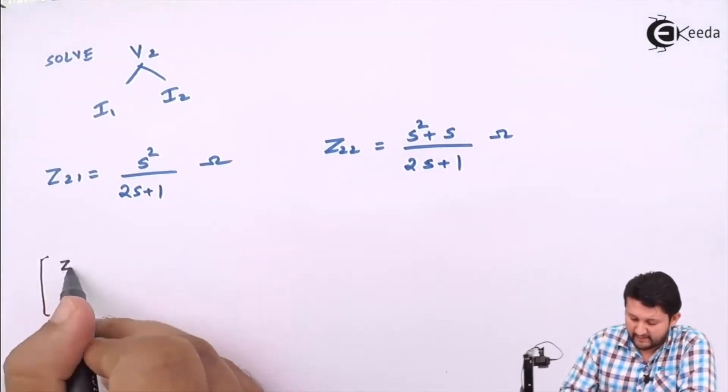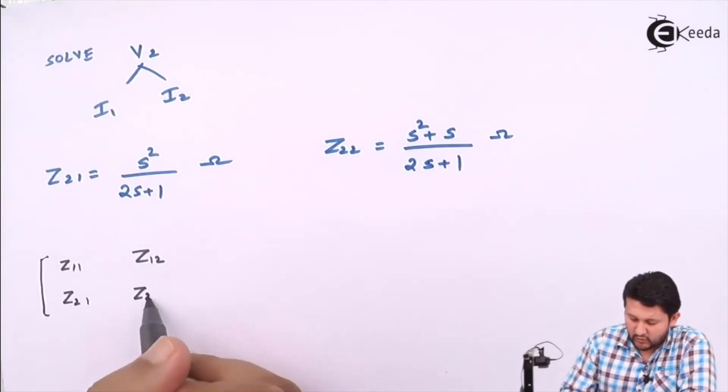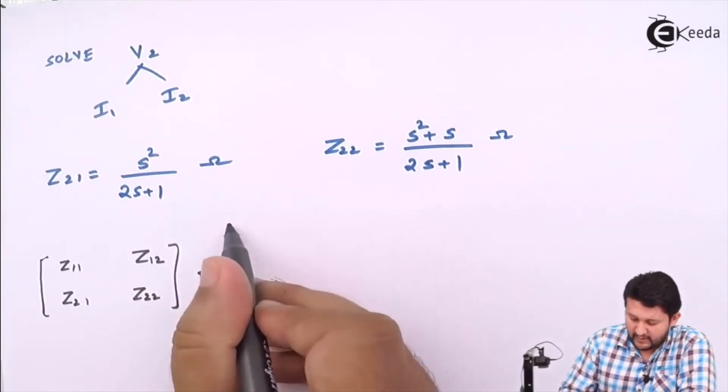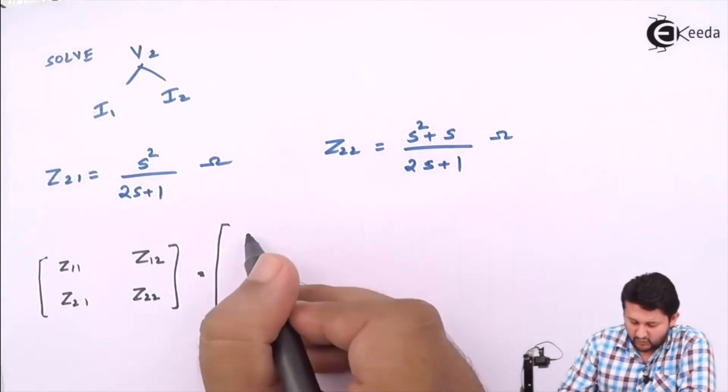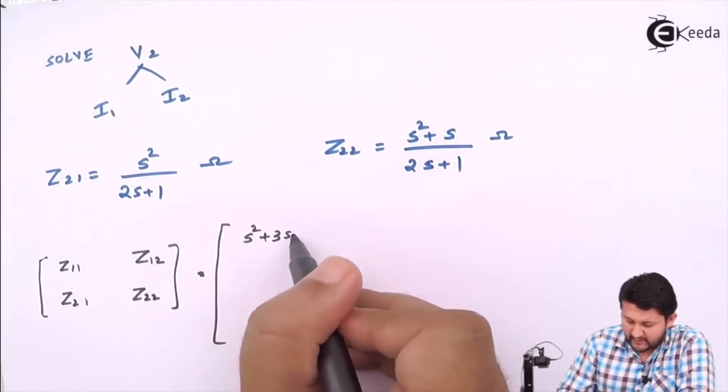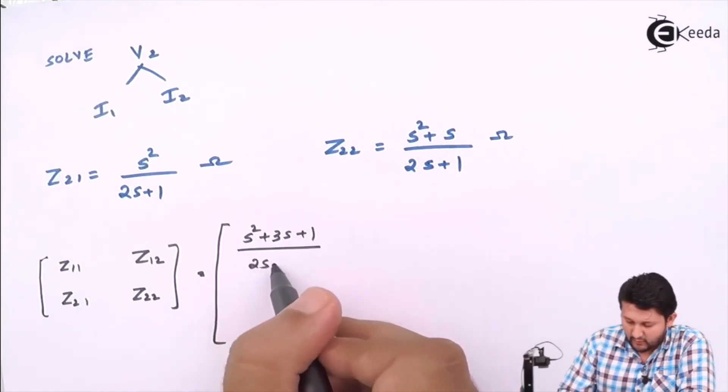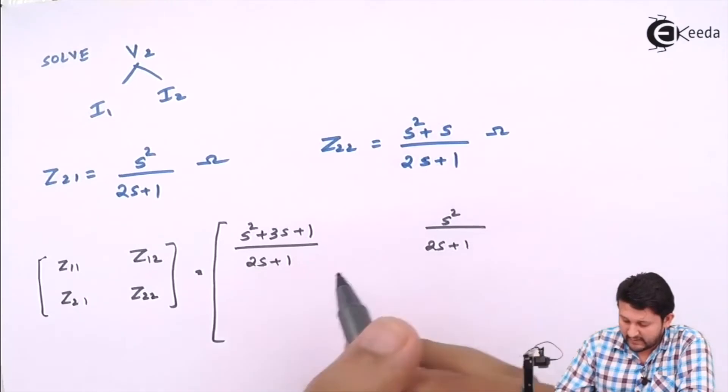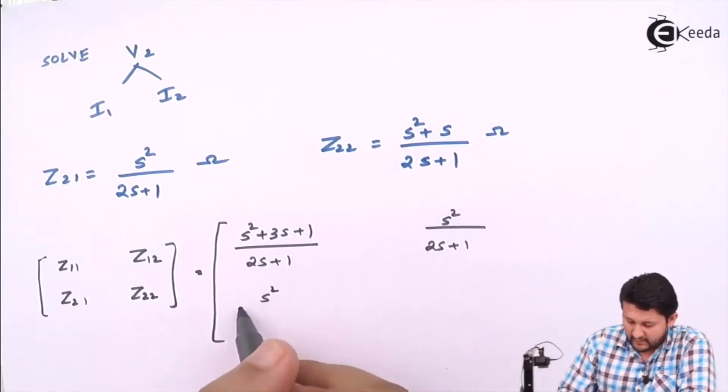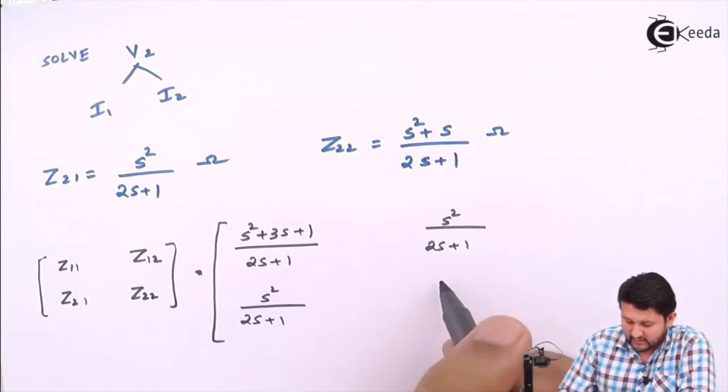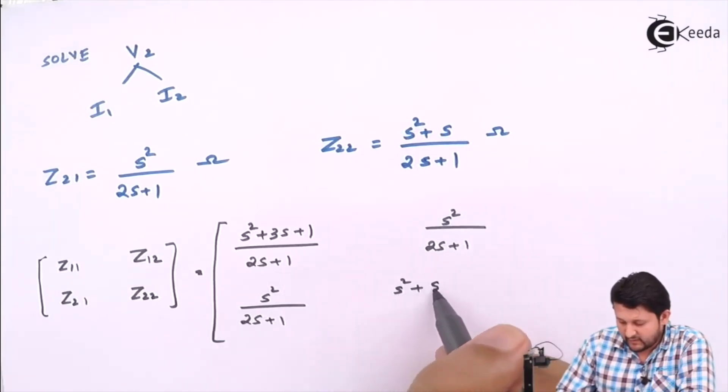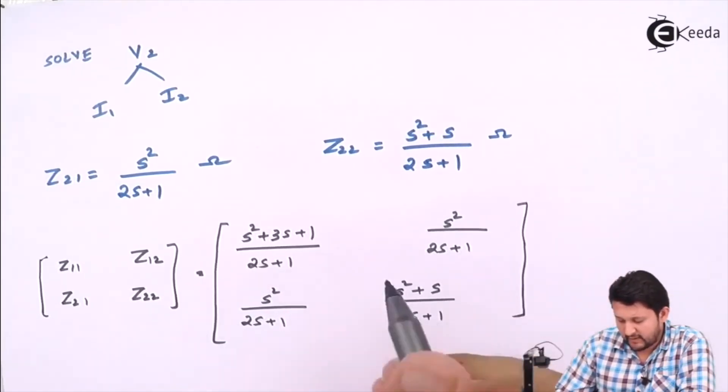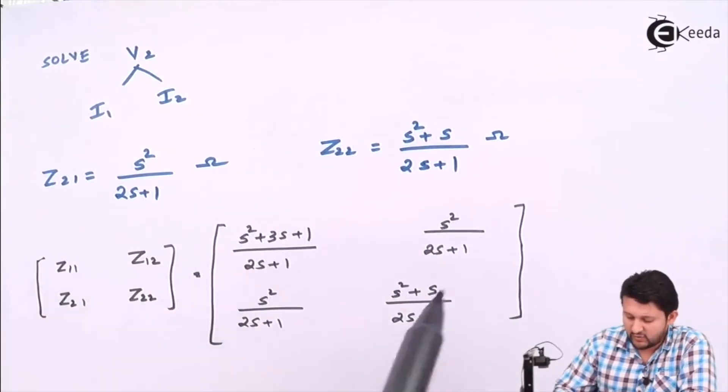This should be the answer which you should get after solving the equation. After getting all the values, put it down into the matrix. So the values will be: Z11 = (s² + 3s + 1)/(2s+1), Z12 = s²/(2s+1), Z21 = s²/(2s+1), Z22 = (s² + s)/(2s+1). That should be the matrix, and the unit which you should be getting is ohms.